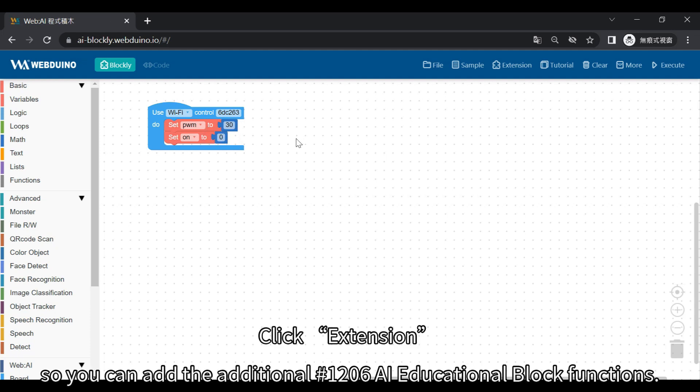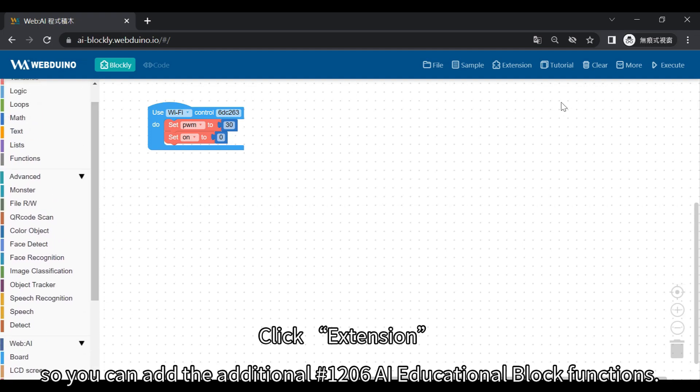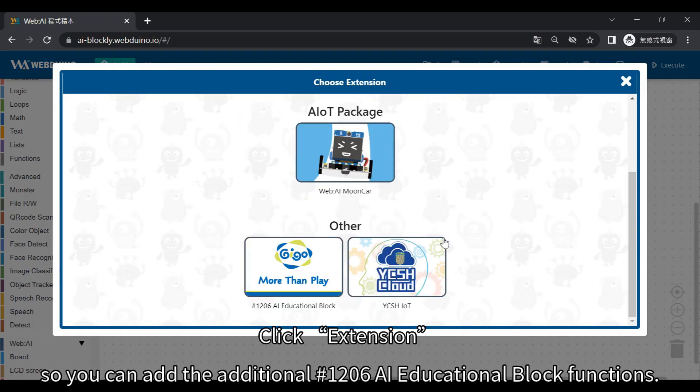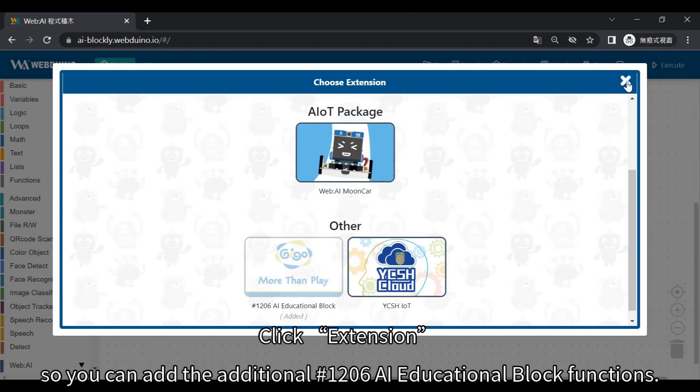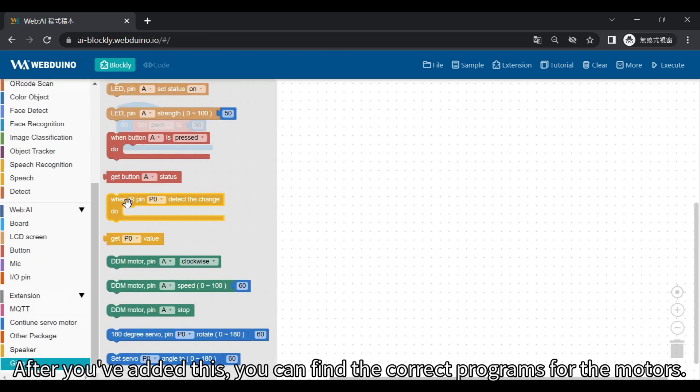Click extension so you can add the additional number 1206 AI educational block functions. After you've added this, you can find the correct programs for the motors.